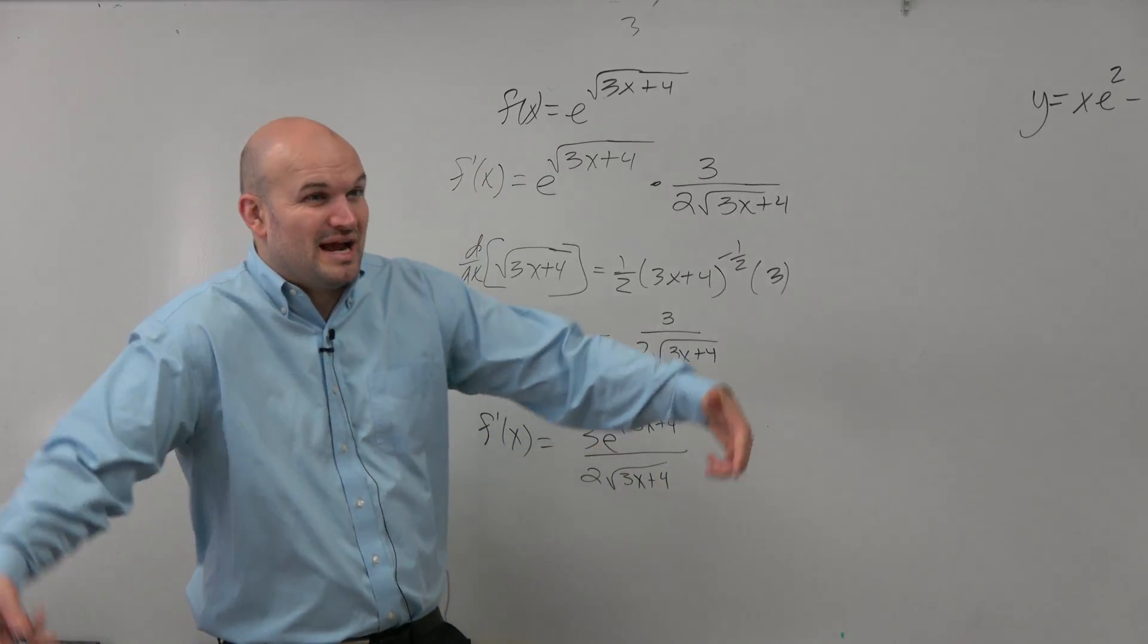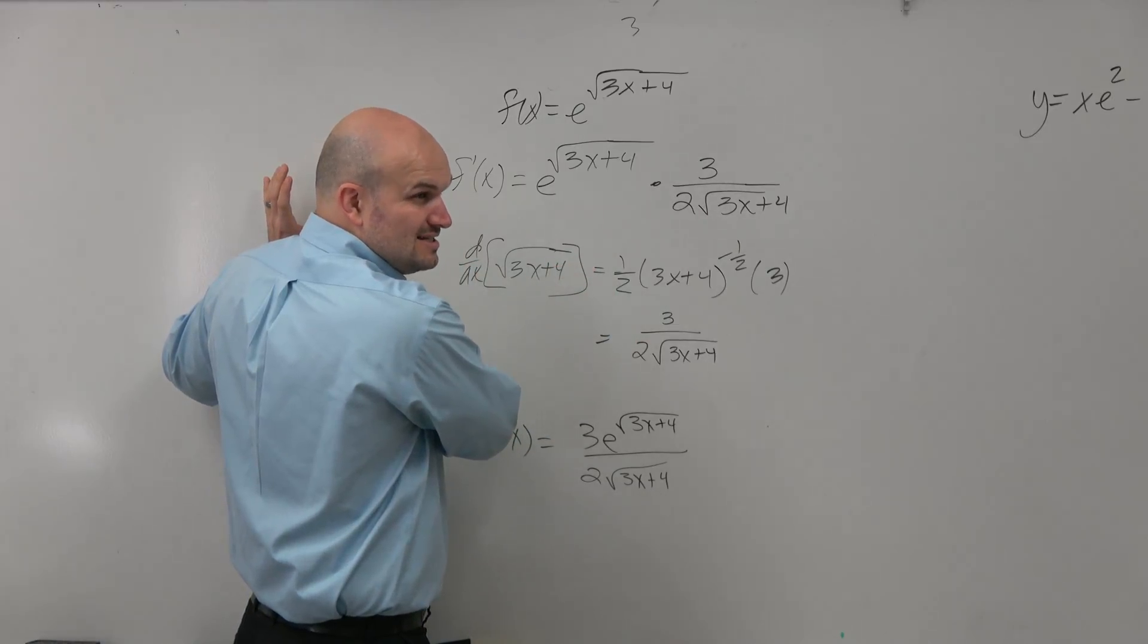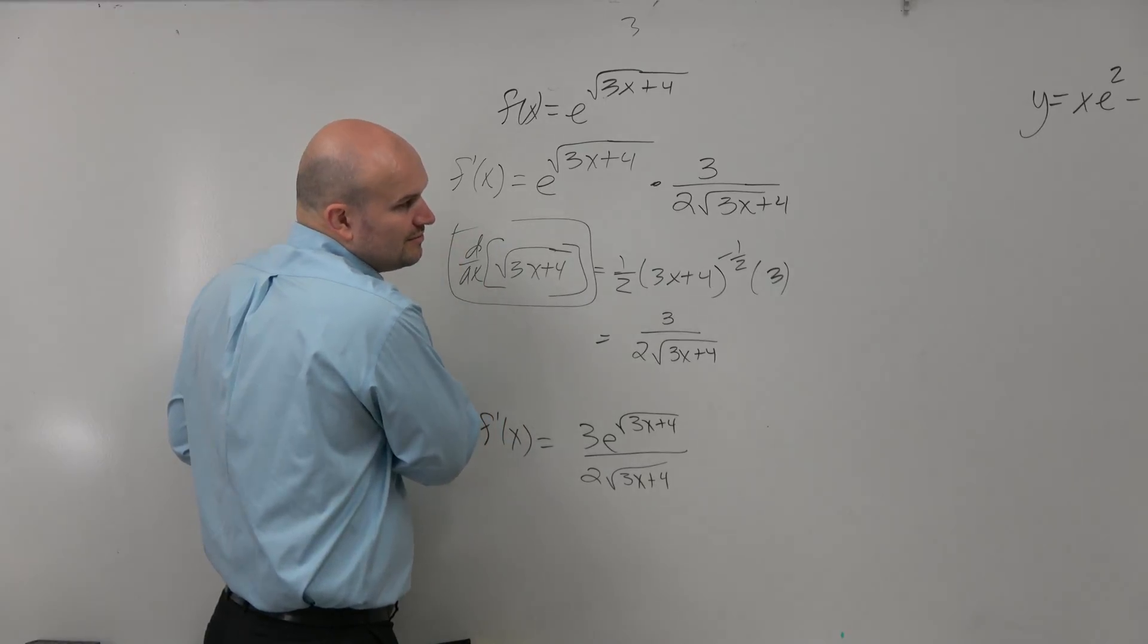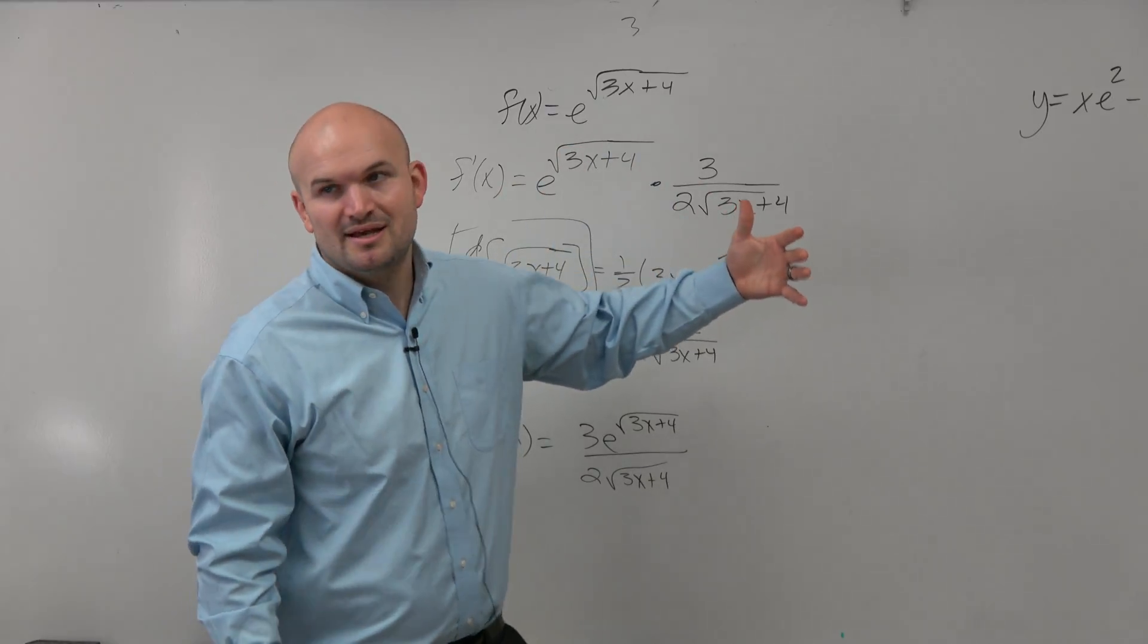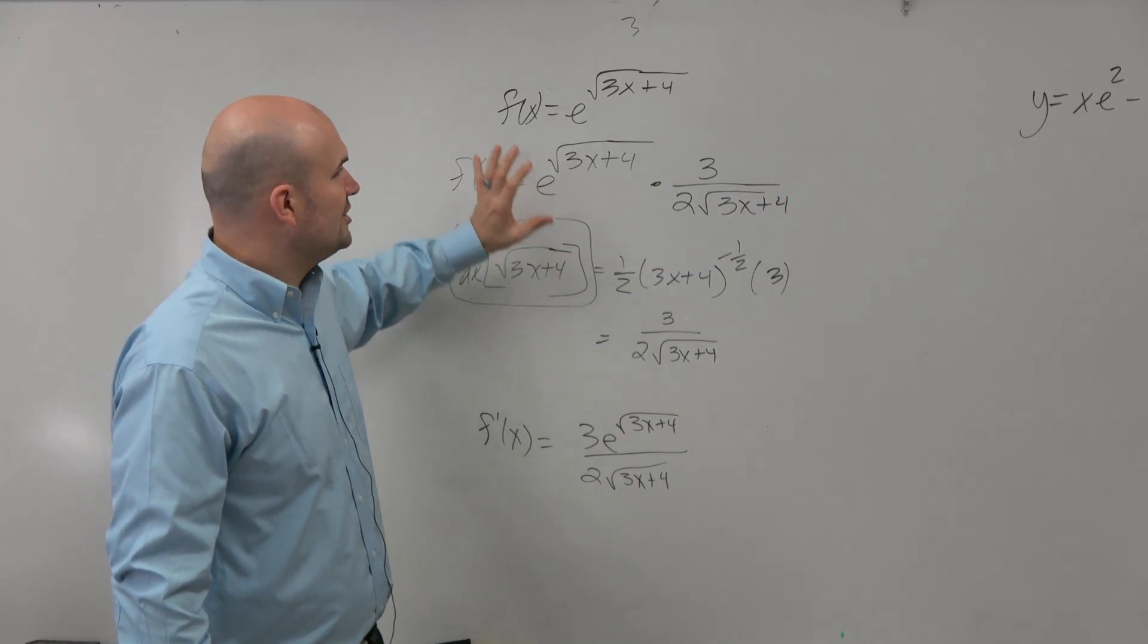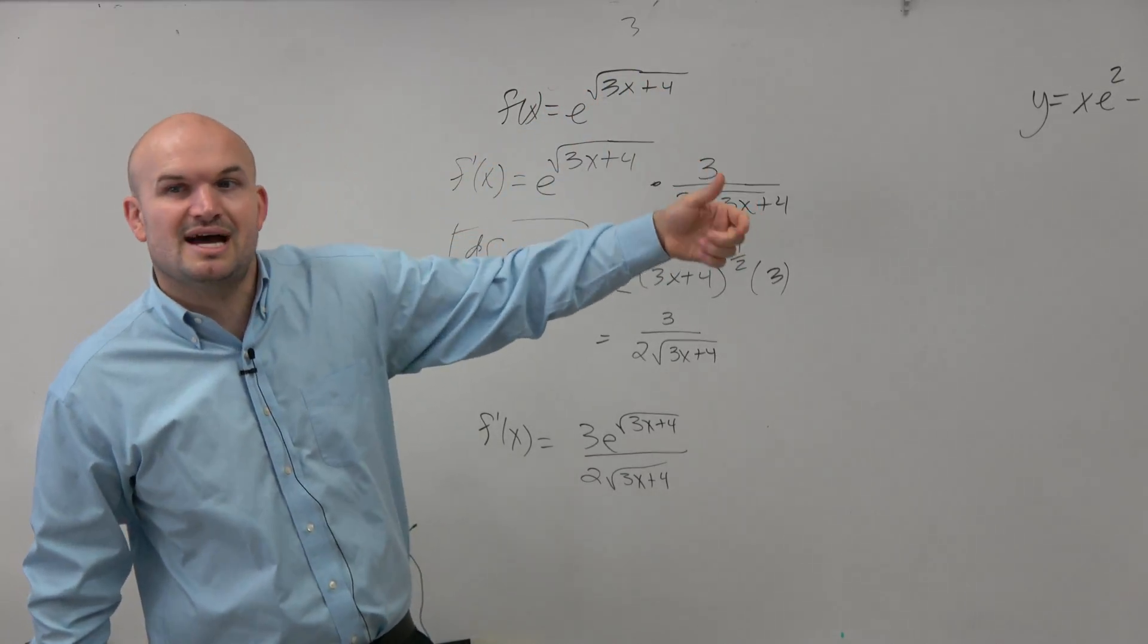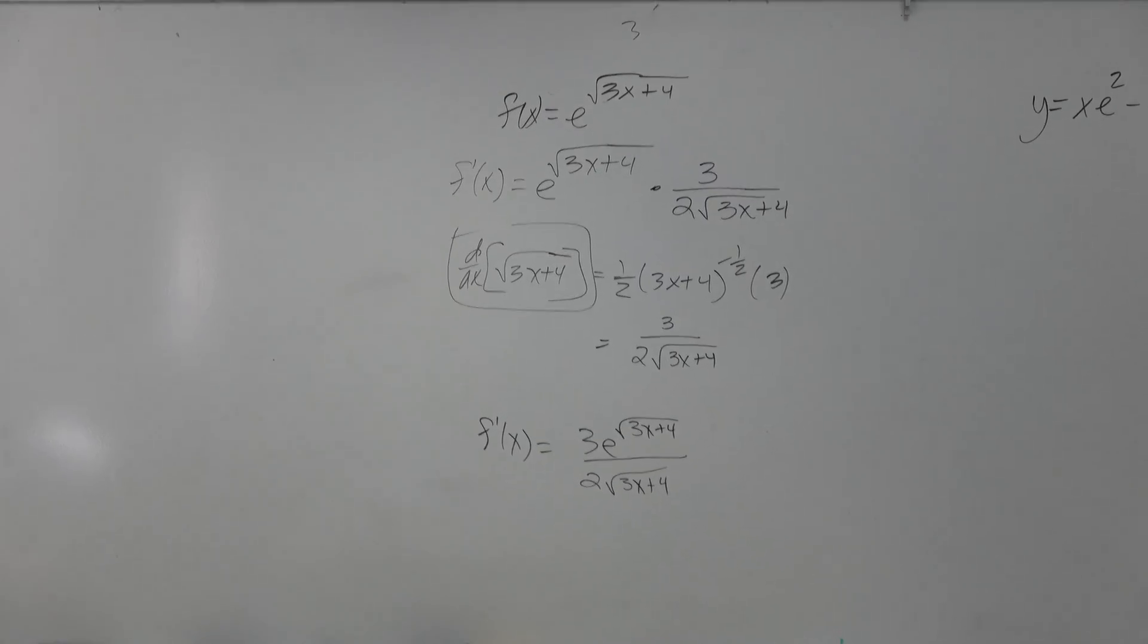So a lot of times when you have these multiple chain rules, I would recommend doing it to the side as needed. But when they get mixed in with other problems, we make mistakes on the simple stuff. So my recommendation is, you know that you're going to have to take the derivative of the square root of 3x plus 4, so just go to the side and take the derivative of it because it is a chain rule. It does include negative exponents. So people do make mistakes on those things, but they're silly mistakes.